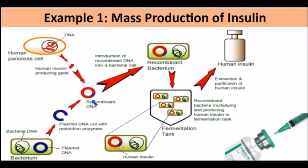Once that recombinant DNA is formed with the desired insulin-producing gene, the recombinant DNA is reinserted into the bacterium, forming the recombinant bacterium. This bacterium is then allowed to multiply in a fermentation tank. Because bacteria multiply very quickly with a very fast reproductive cycle, as they multiply in the fermentation tank, more bacteria are produced and therefore more of the human insulin recombinant DNA is generated. Because the bacteria carry this human insulin gene inserted into the bacterial plasmid, we can then extract and purify the actual insulin — the protein product of the gene — for use by diabetics to treat their condition.